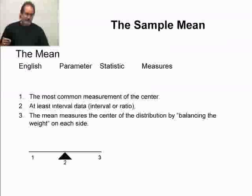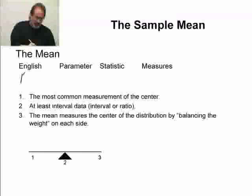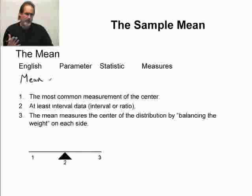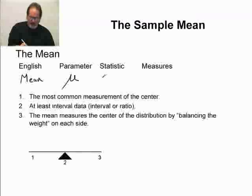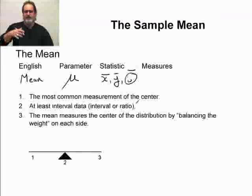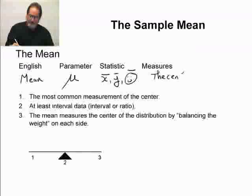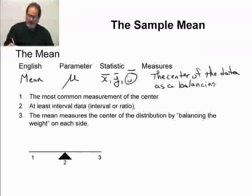Now, the mean, let's talk about some symbols that we really need to be extremely comfortable and familiar with. In English, we'll talk about the mean. The parameter value, the symbol that we will use to represent the true mean, the parameter value, will be the Greek letter mu. The statistic will be x bar. If our variable is x, it's the bar over the top that says this is the sample average. If our variable is y, it's y bar. If our variable is smiley, then it's smiley bar. It's whatever the variable is with a bar over the top. It's the bar that says this is the sample average. And what does it measure? It measures the center of the data as a balancing point.